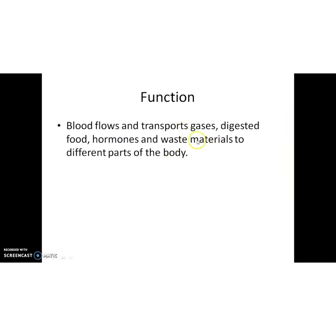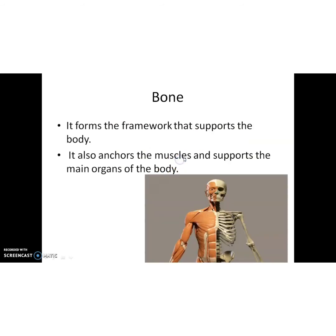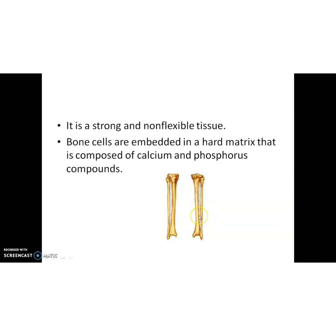If the question asks for the function of blood, you can write: blood transports gases, digested food, hormones and waste material to different parts of the body. The second example of connective tissue is bone. Bone forms the framework that supports the body, anchors the muscles, and supports the main organs. It is a strong and non-flexible tissue. Bone cells are embedded in a hard matrix composed of calcium and phosphorus compounds.